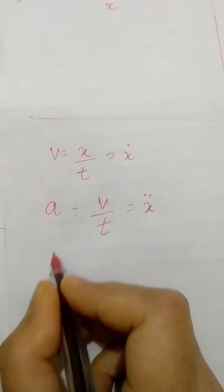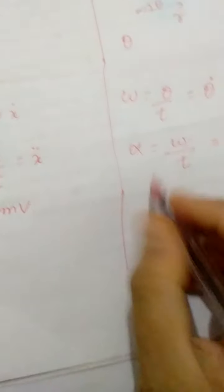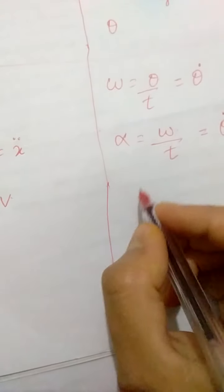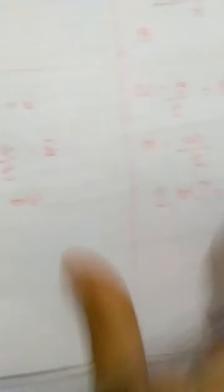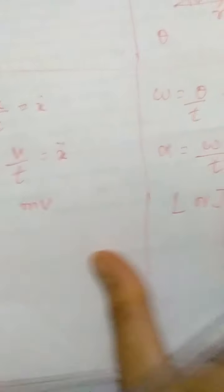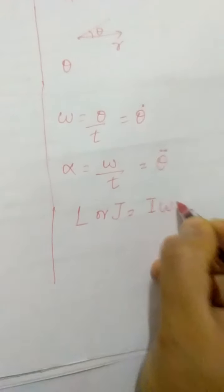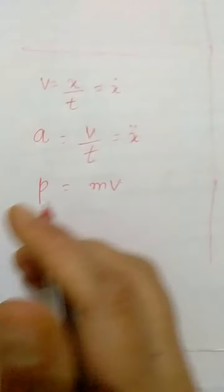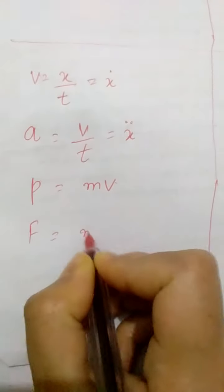In linear motion, we define linear momentum p as simply the product of mass and velocity — all of you know that. In rotary motion, we define angular momentum, denoted either by L or J. Since in linear momentum it is mass times velocity, for mass we write the moment of inertia and for velocity we write the angular velocity, so angular momentum is I omega. Similarly, in linear motion we define force as mass times acceleration.